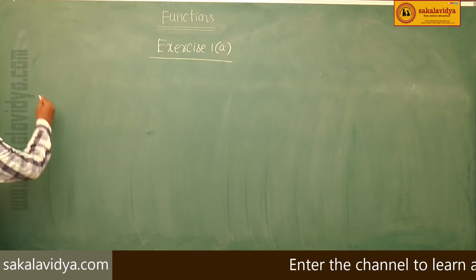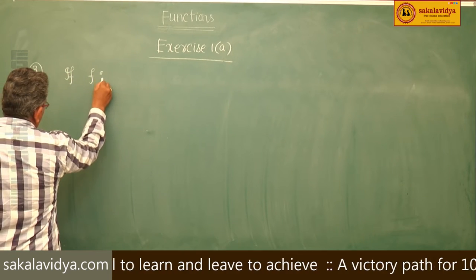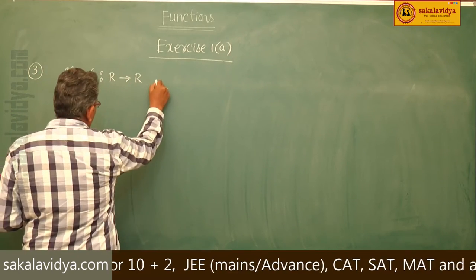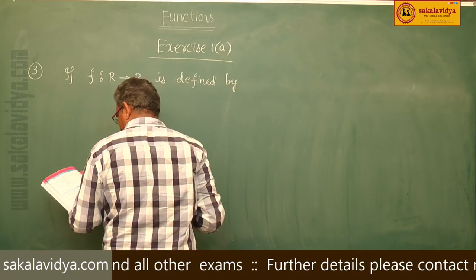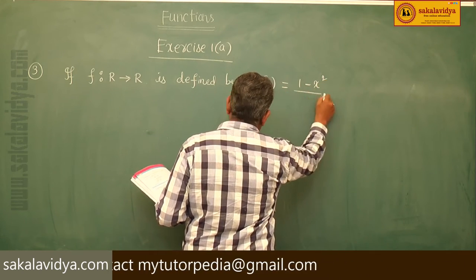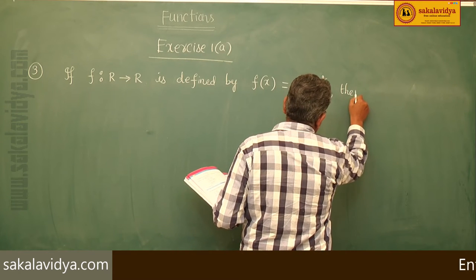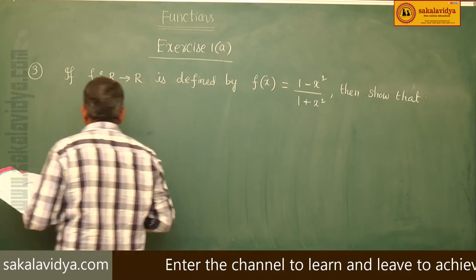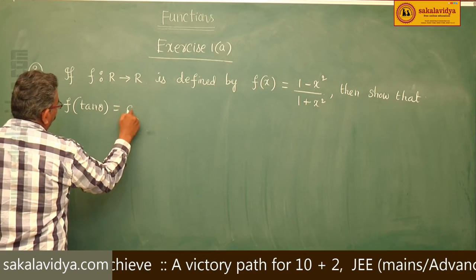Third problem: if f maps ℝ to ℝ and is defined by f(x) = (1 - x²) / (1 + x²), then show that f(tan θ) = cos 2θ.